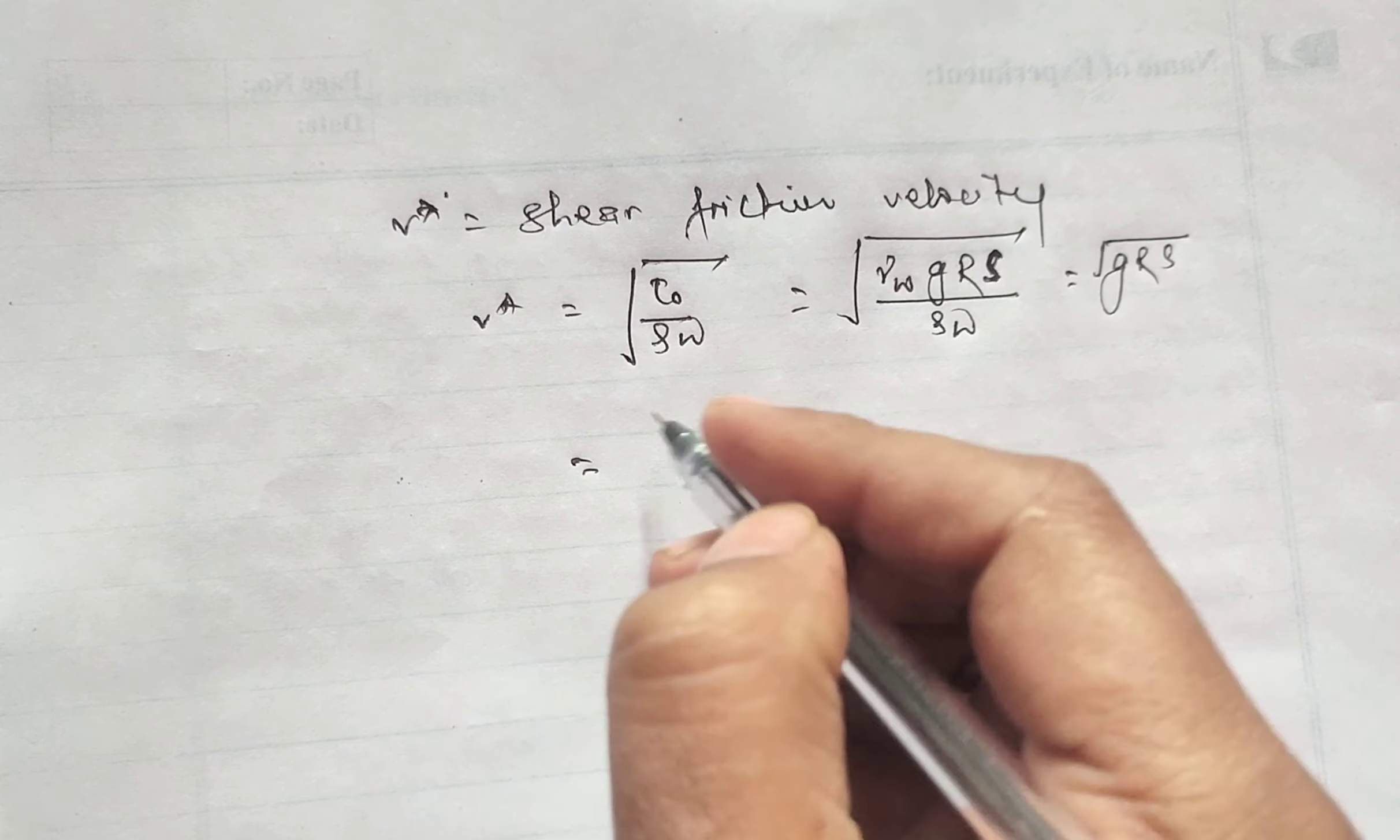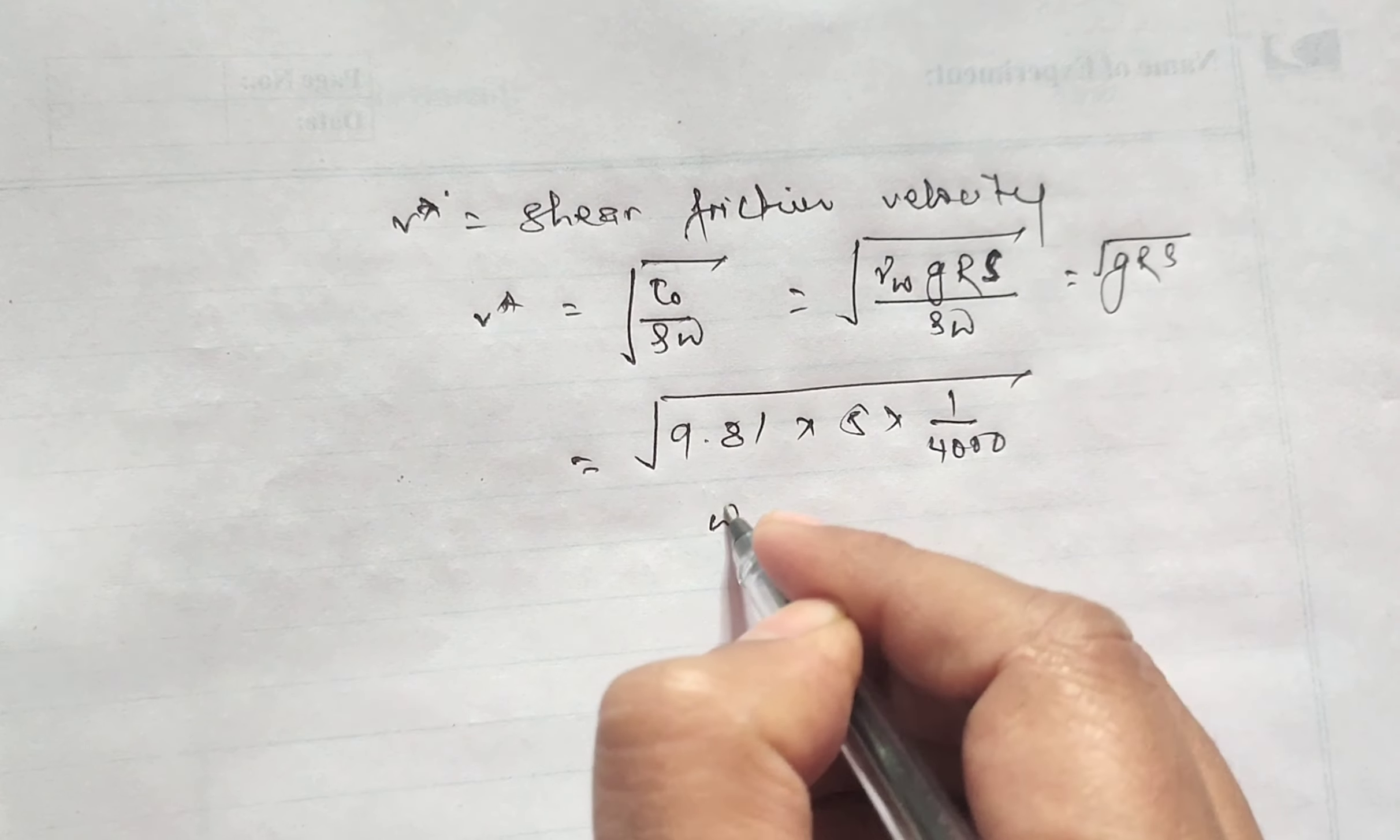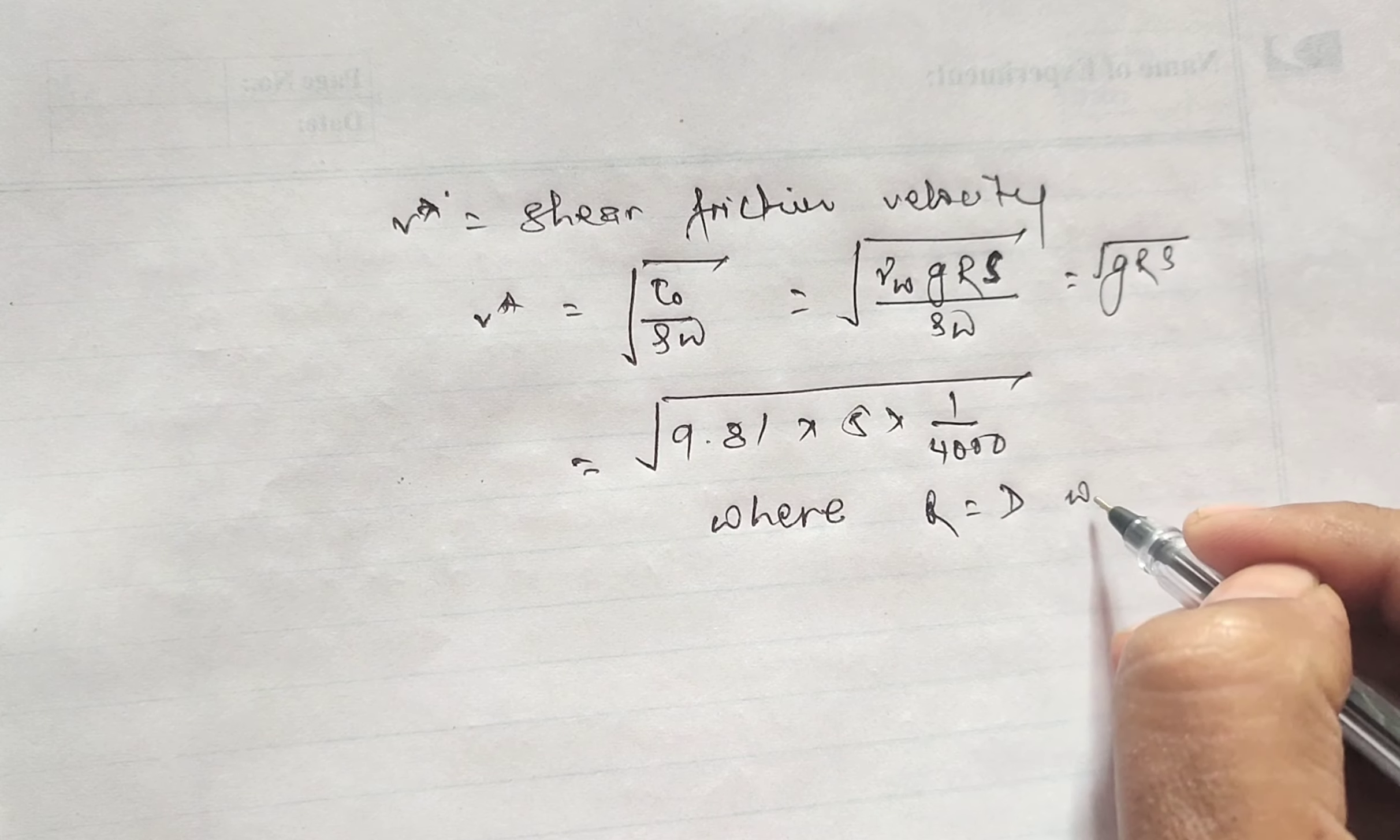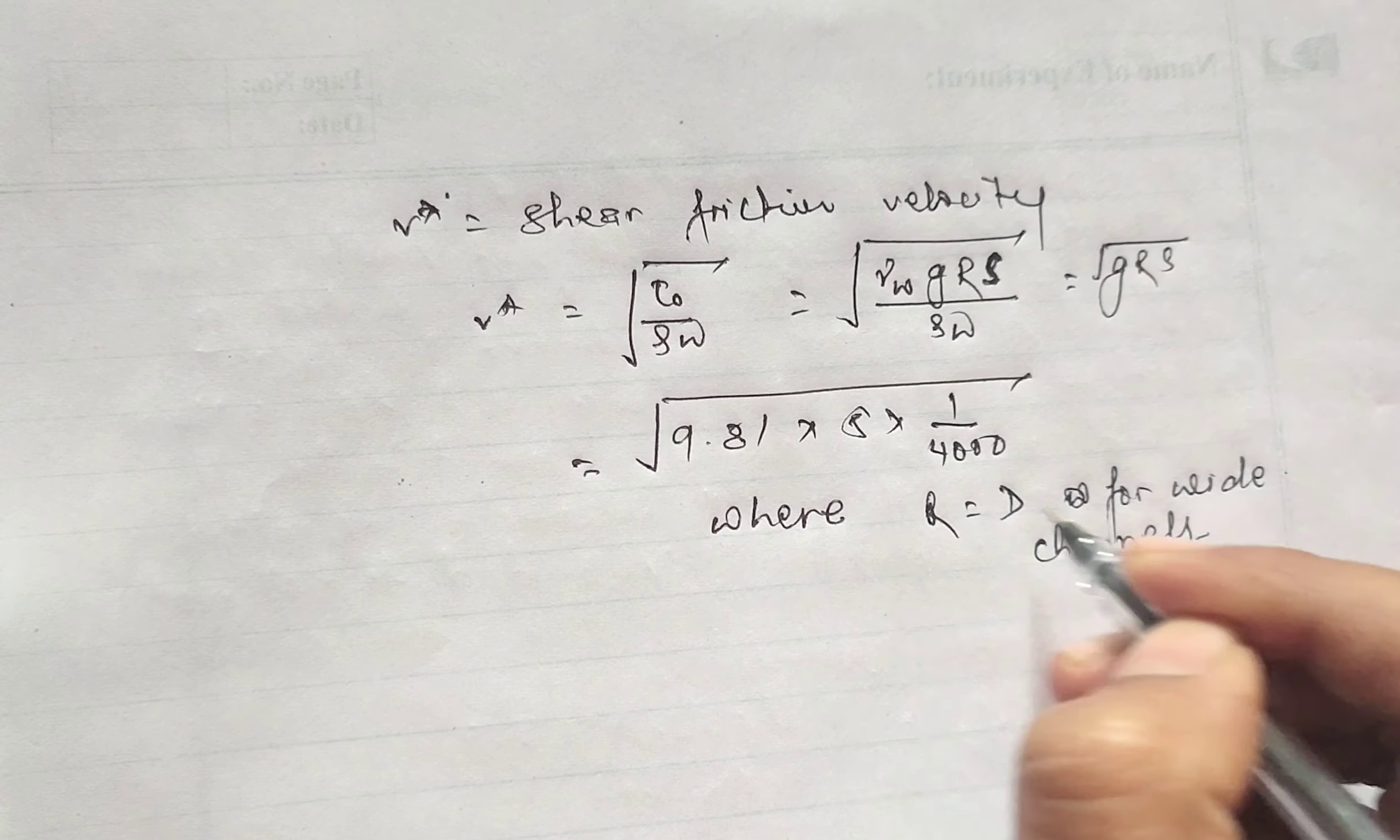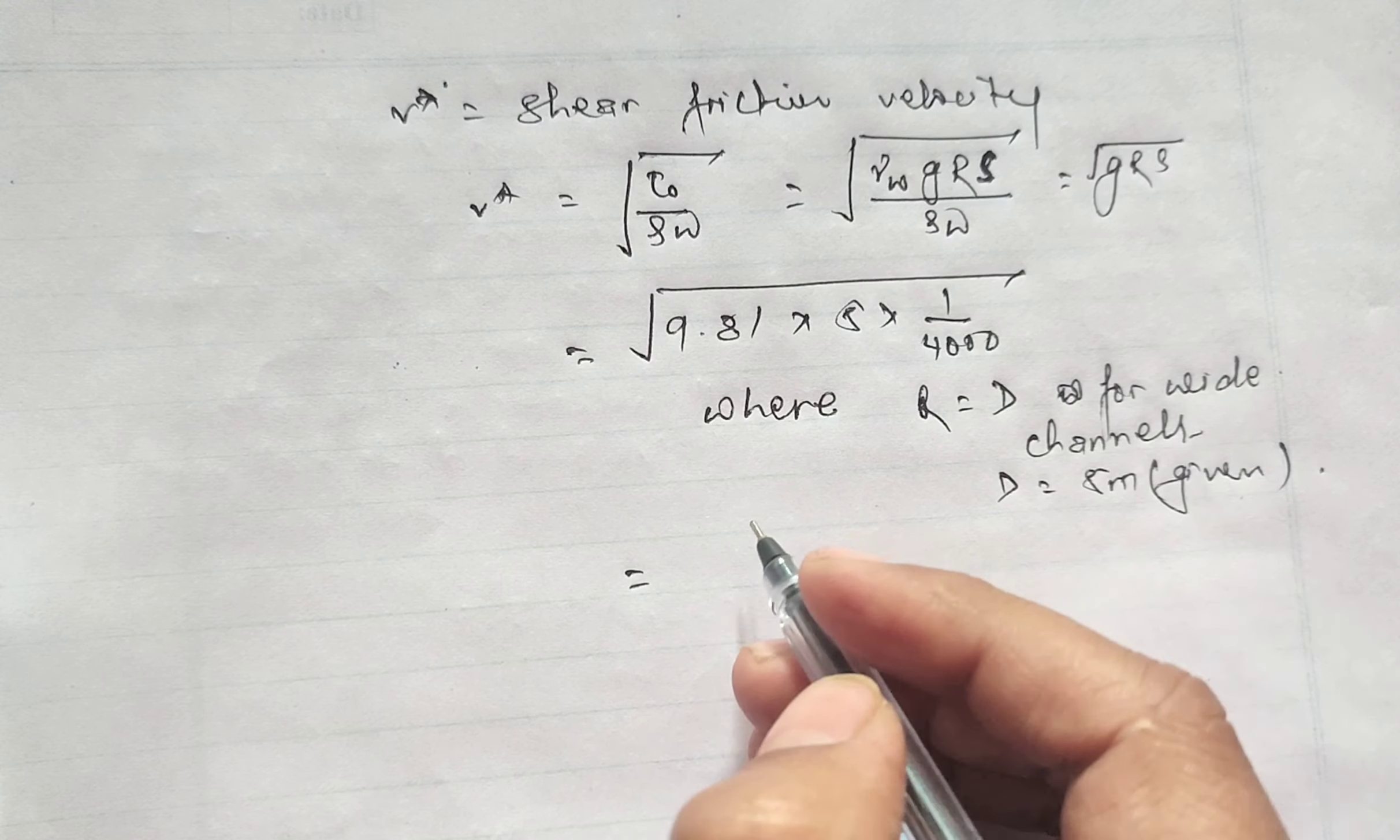that is v* equals √(gRS), placing the value equals √(9.81 × 5 × 1/1000), where R equals D for wide channel, as the value of D is given 5 meter. On solving this, the value of v* is 0.111 meter per second.